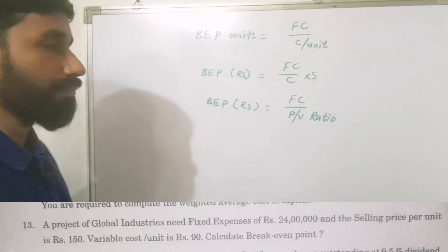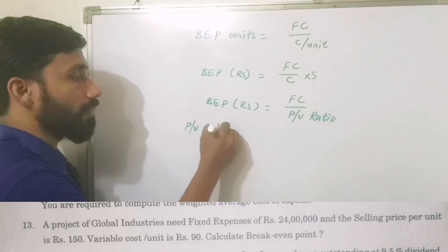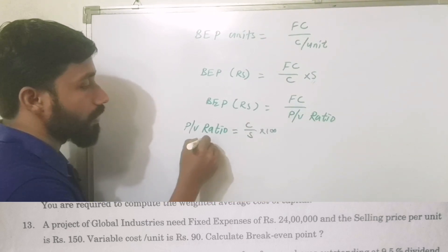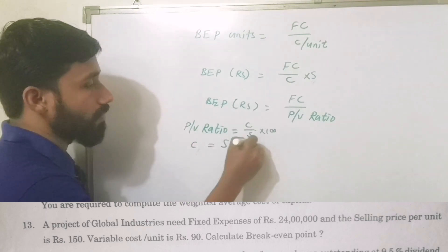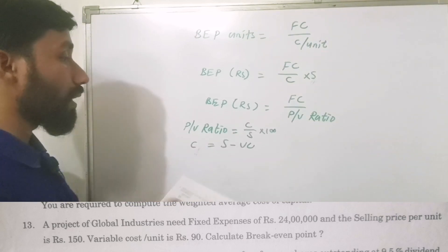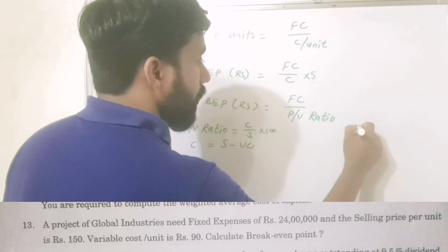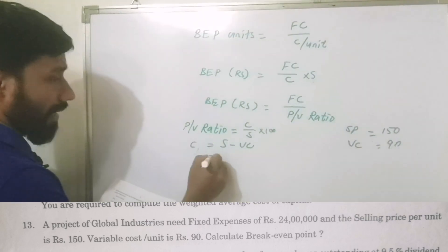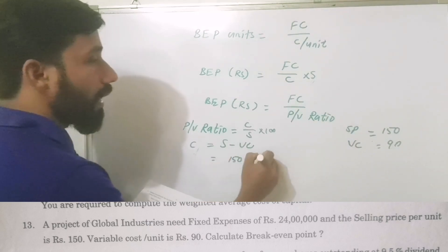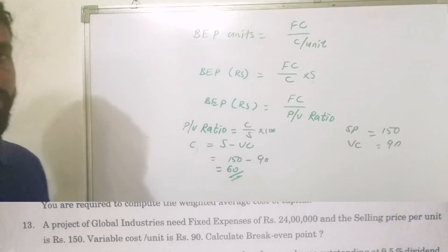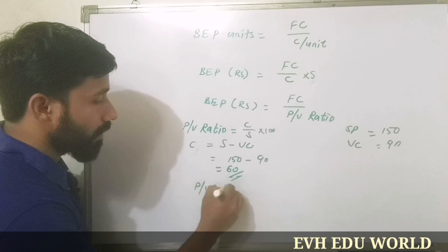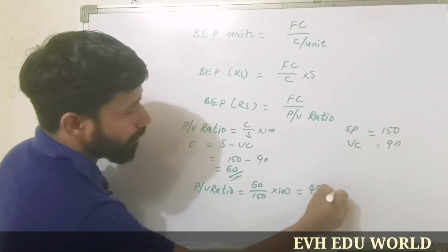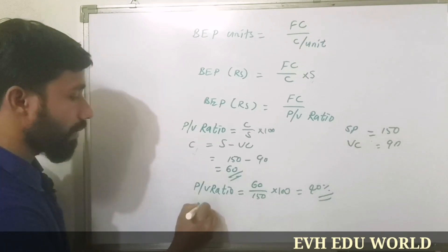We have a problem with PV ratio, so we have to calculate it directly. PV ratio is equal to contribution divided by sales into 100. Contribution is equal to sales minus variable cost. In our question, the selling price per unit is 150 and the variable cost per unit is 90. So contribution per unit is 150 minus 90, which equals 60. PV ratio is equal to 60 divided by 150 into 100.